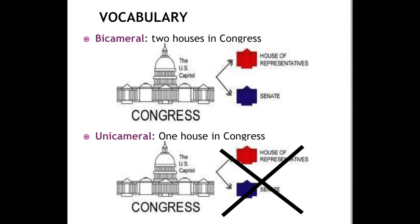A couple of important vocabulary words: bicameral and unicameral, and it's all relating to Congress. Bicameral means that Congress would be divided into two sections — we would split Congress right in half and have two different sections called the House of Representatives and the Senate. Unicameral means that we don't divide Congress; instead, it's just one Congress all together without a division.